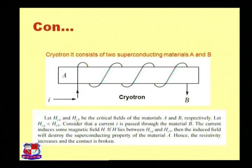Let HCA and HCB be the critical fields for these type of materials A and B respectively. Let HCA critical field be less than the critical field HCB. Consider that a current I is passed through the material B, the current induces some magnetic field H. If H lies between HCA and HCB, then the induced field will destroy the superconducting property of material A.